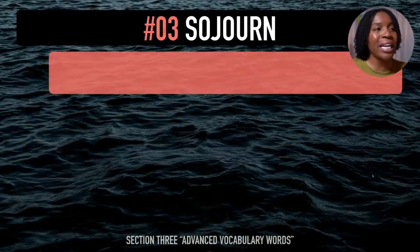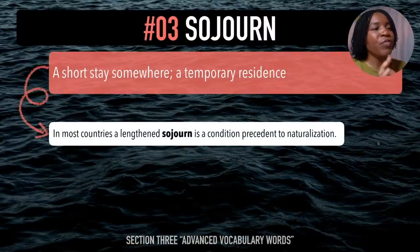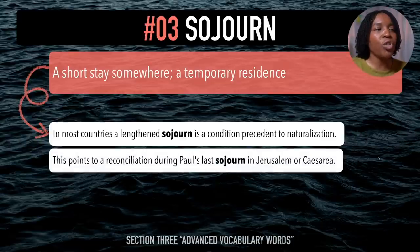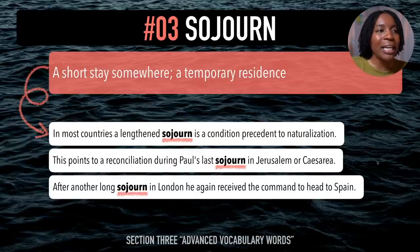The next advanced vocabulary word is 'sojourn'. You hear that 'juh' in there, right? After me — sojourn. Sojourn means a short stay somewhere or a temporary residence. Example sentences: In most countries, a lengthened sojourn is a condition precedent to naturalization. This points to a reconciliation during Paul's last sojourn in Jerusalem or Caesarea. After another long sojourn in London, he again received the command to head to Spain. Last time — sojourn.